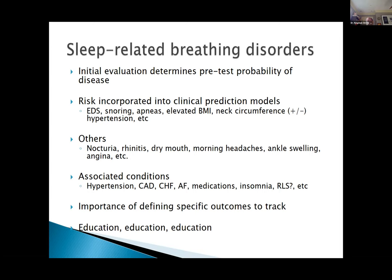You want to determine pretest probability of sleep apnea because it is very, very common. Even if they come in with insomnia, look for sleep apnea — 20% of sleep apnea patients complain of insomnia. Risk factors include excessive daytime sleepiness, snoring, apnea, elevated BMI, neck circumference, hypertension, and cardiovascular disease. These are incorporated into clinical prediction models. These are what you elicit from the patient while they're awake — before you have any data from when they're asleep.